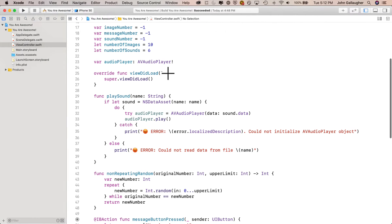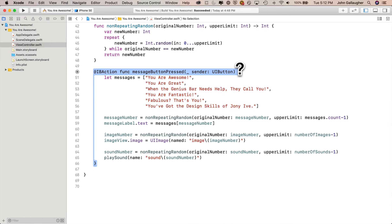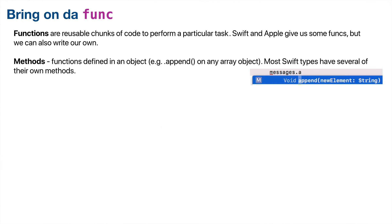viewDidLoad is an Apple function, given to us by Apple, and it's called automatically when the view loads. We also wrote our own function when we control-dragged from the interface builder canvas. Functions created as part of different objects are referred to as methods. You'll see the words methods and function used interchangeably. The M in code completion, for example after append in dot notation, means it's a method or function. All methods in Swift are functions.